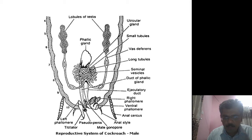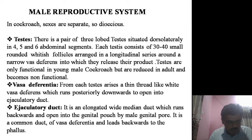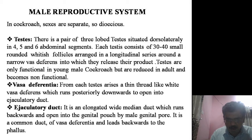The testes are reduced in adult cockroach and become non-functional. The testes lead into long narrow ducts called the vas deferens. Each vas deferens arises from each testis and runs posteriorly downwards up to the ejaculatory duct.